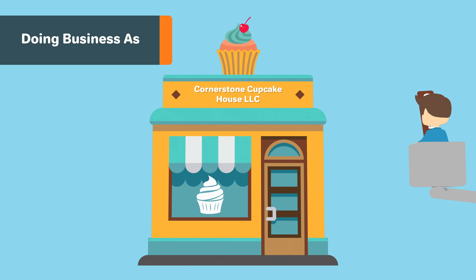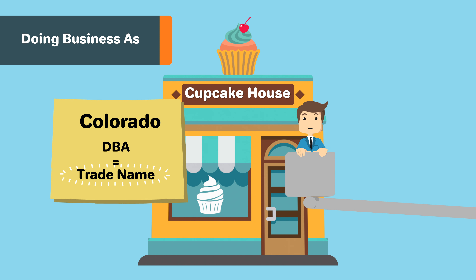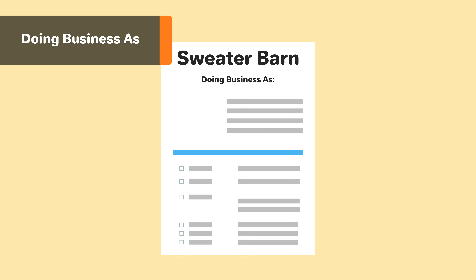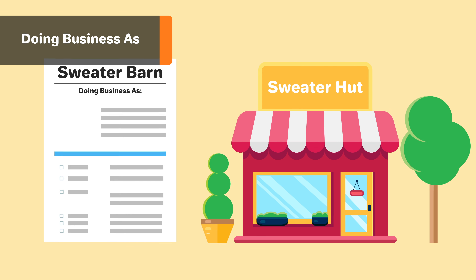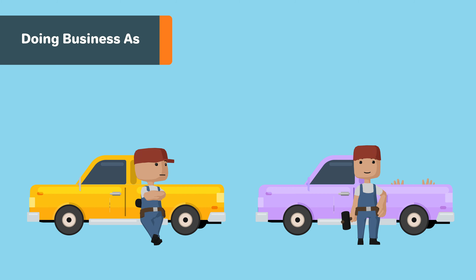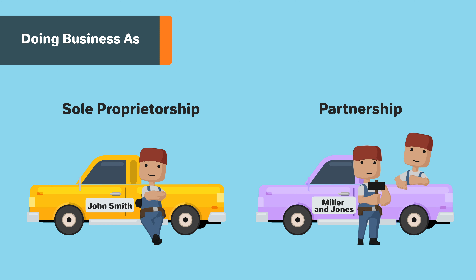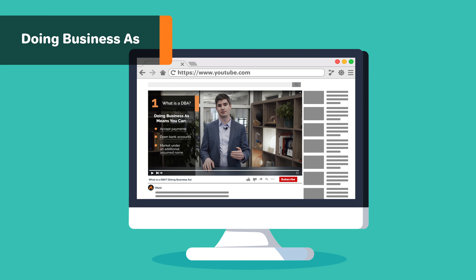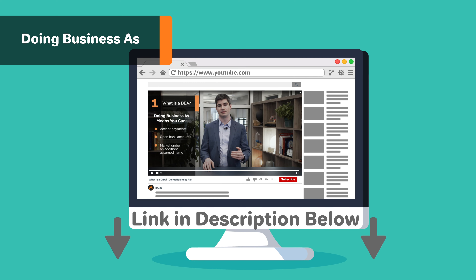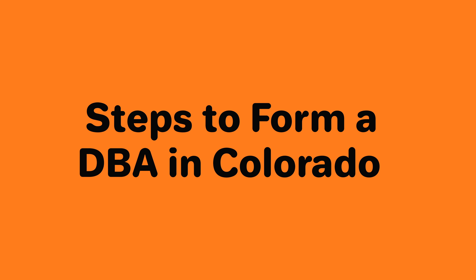A DBA, or doing business as, is essentially a nickname for your company. In Colorado, a DBA is also called a trade name. DBAs are a great way to rebrand your company name, to add new brands to your company, or to change your company name completely. For sole proprietors and partnerships, DBAs offer the ability to operate under a name that isn't the business owner's surname. In this video, we will go over the steps you need to take in order to form a DBA in Colorado.